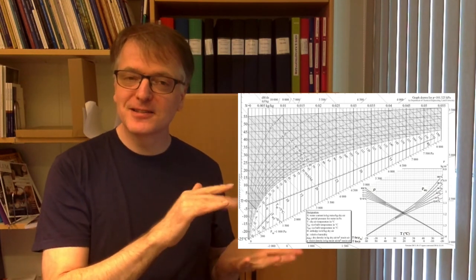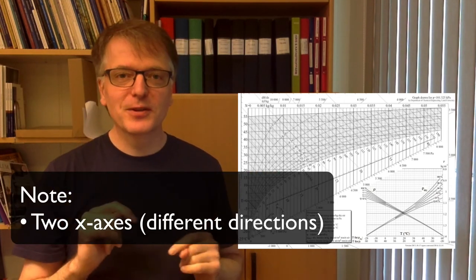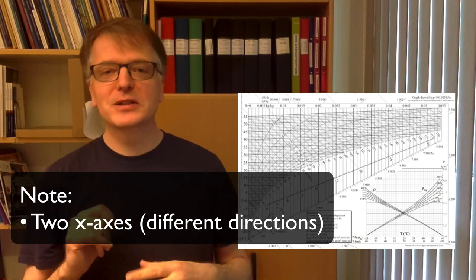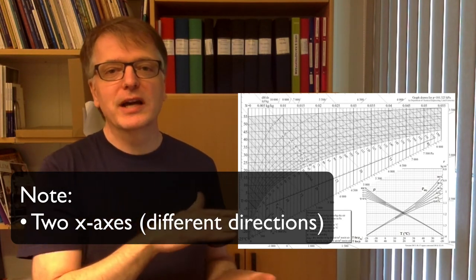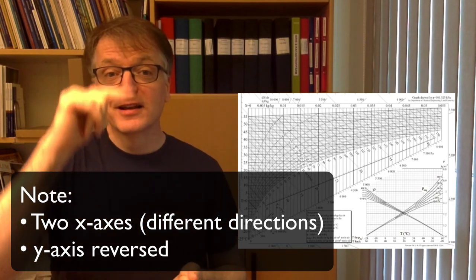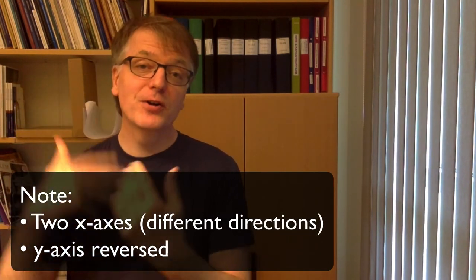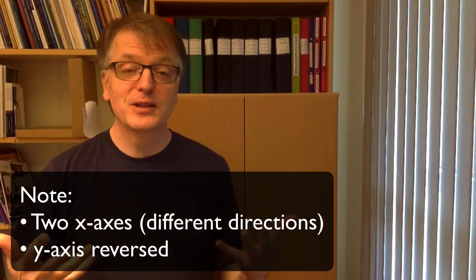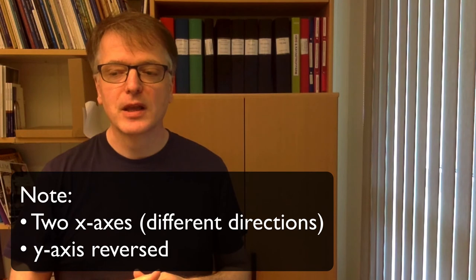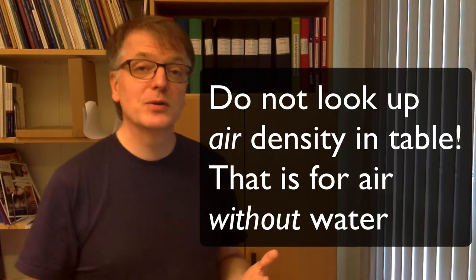So important: if you use the graphs for densities, then keep in mind that there are two different x-axes. You need to keep track of which is the dry density and which is the wet density. The temperature axis and then the y-axis is typically reversed, so you need to keep track of that as well.